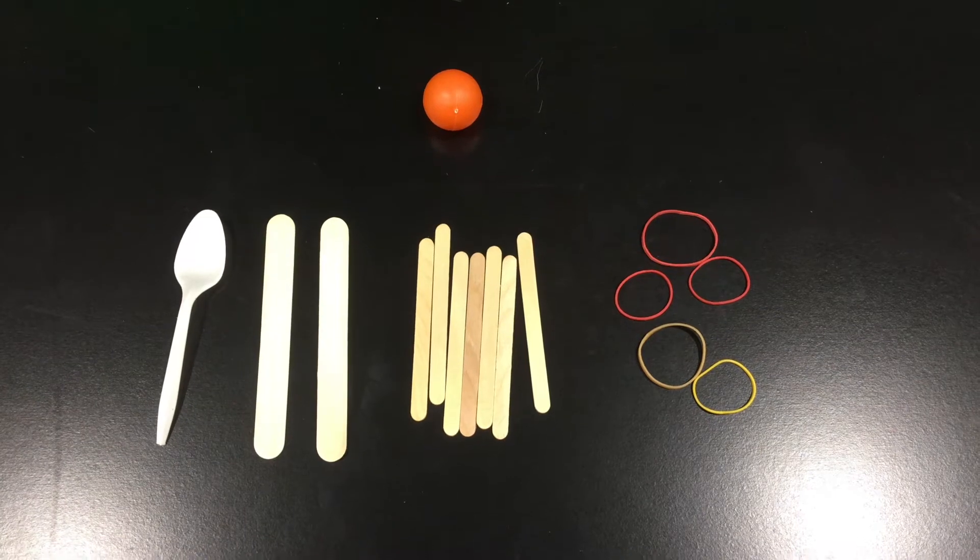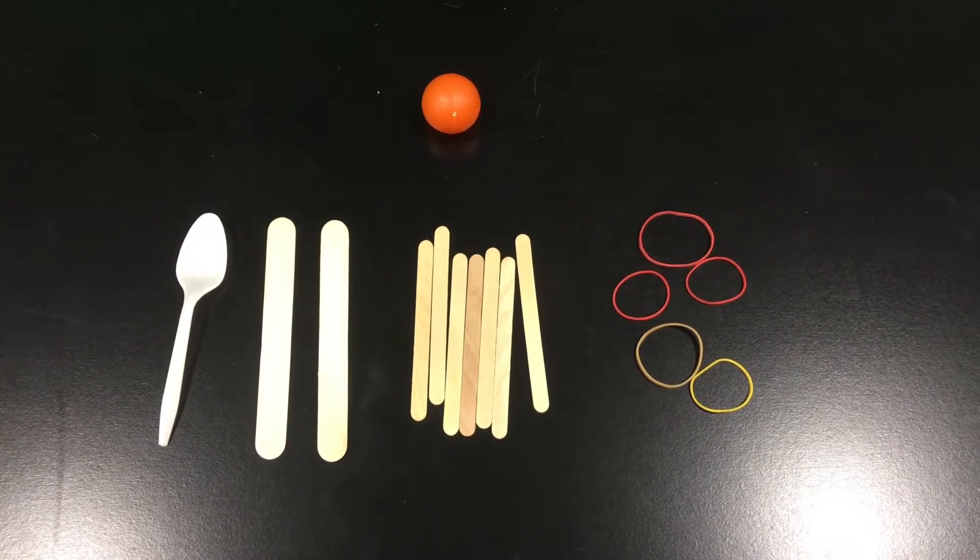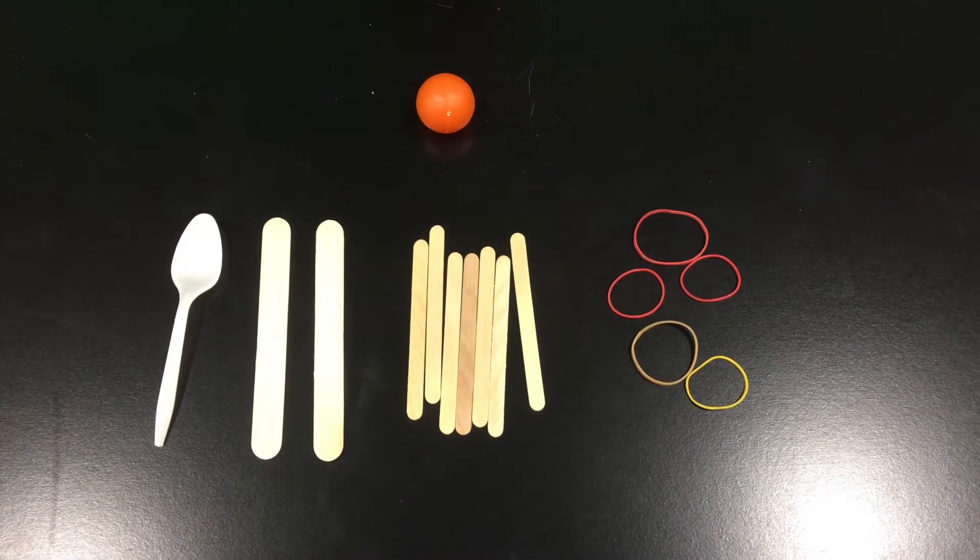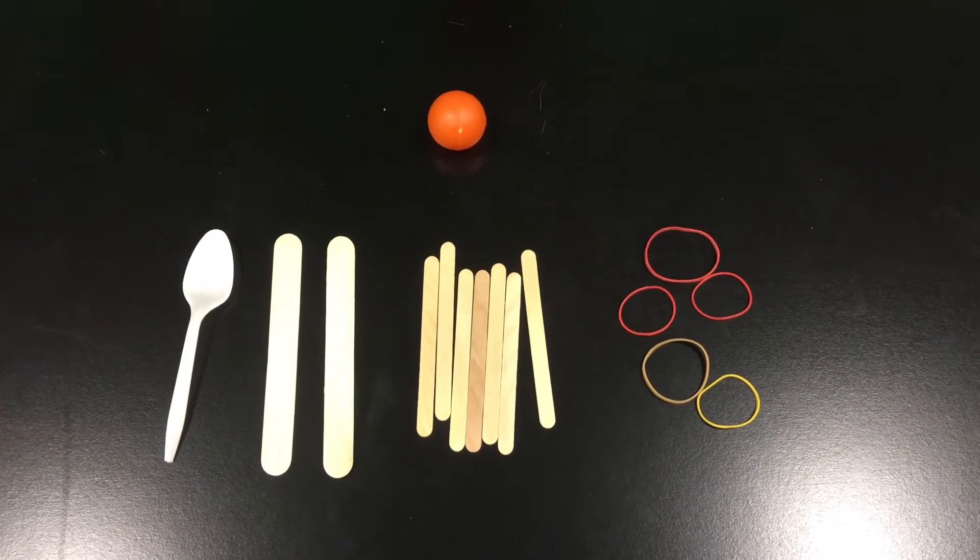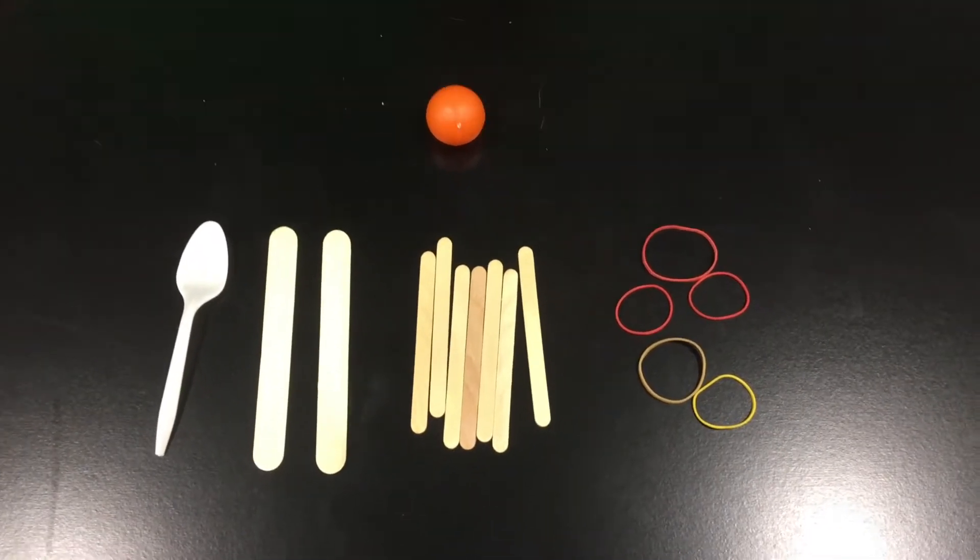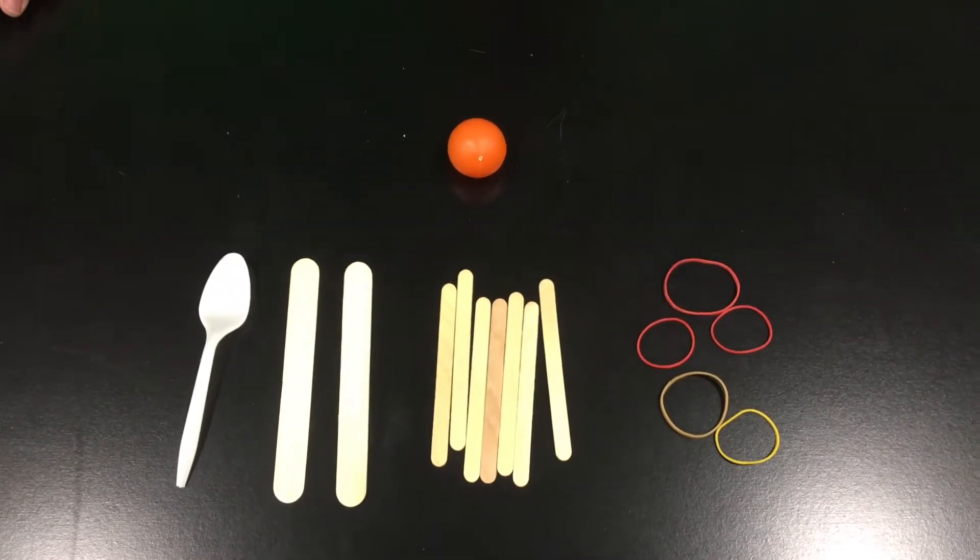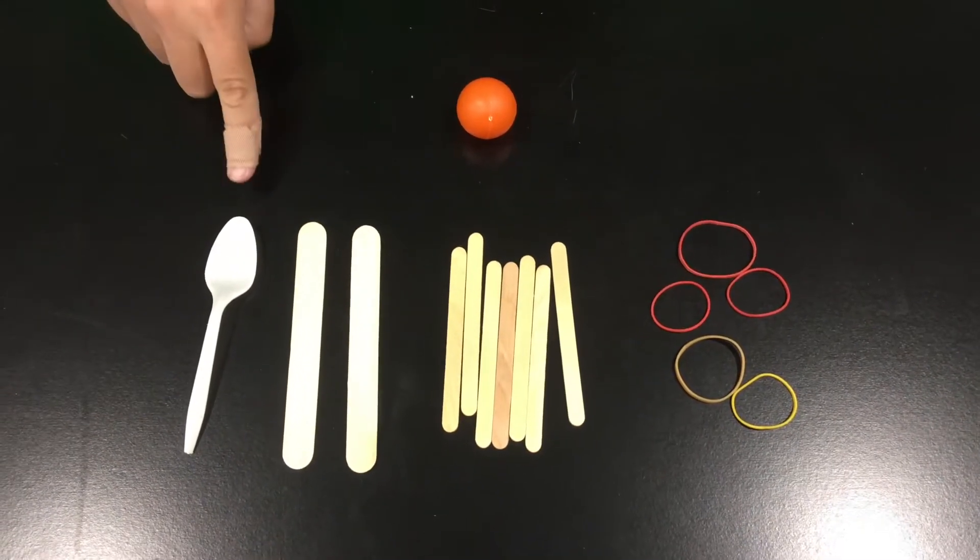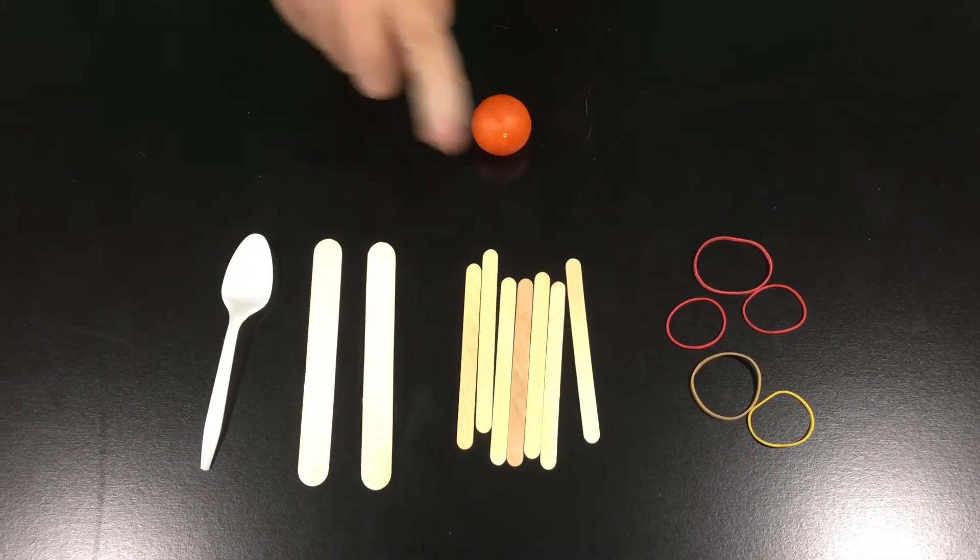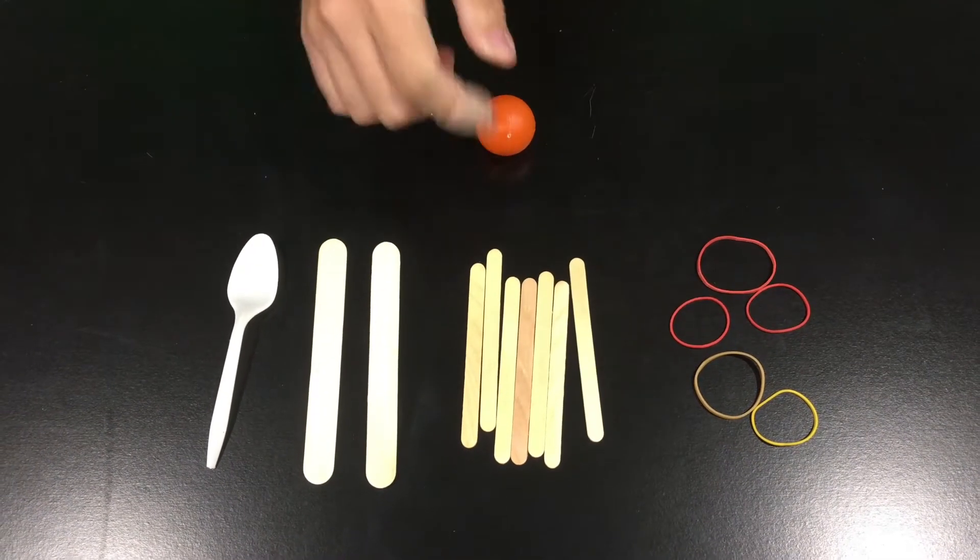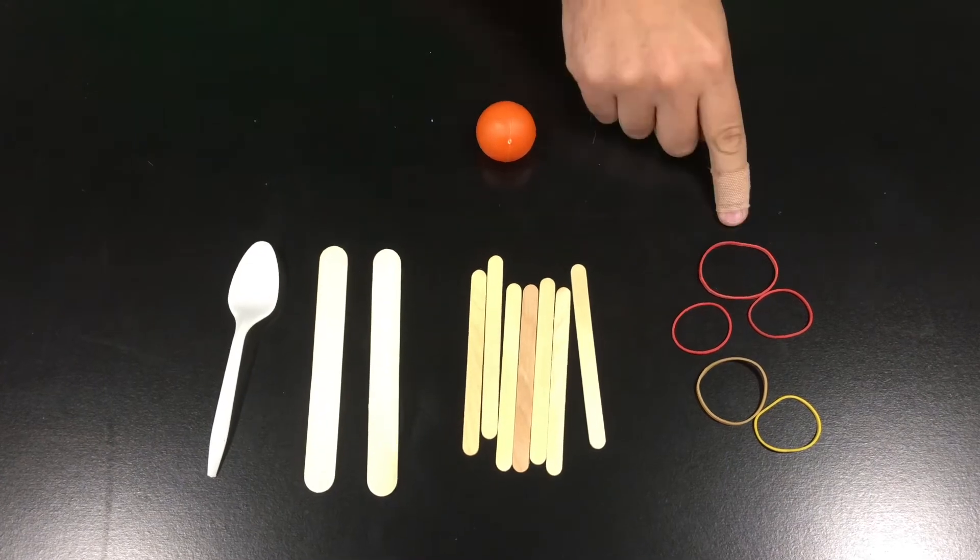Okay students, now that you've done the ping pong popper, we're going to do a Launch It activity. First, gather your materials: your ping pong ball from the ping pong popper, your spoon, two big tongue depressors or popsicle sticks, five to seven craft sticks, and five rubber bands.